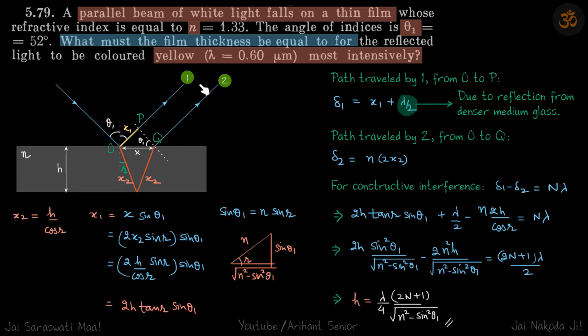We've seen in the previous problem that when you have constructive interference, the thickness of the film is given by a specific formula. For destructive interference, the only thing that changes is instead of n lambda, you will have 2n plus 1 lambda by 2.